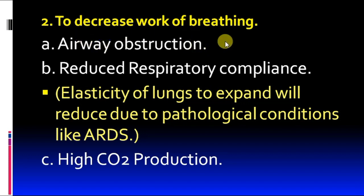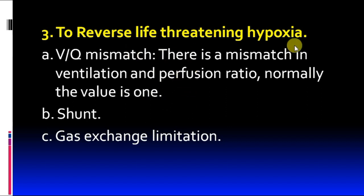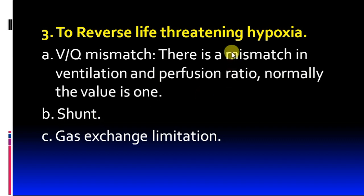Another indication is to reverse life-threatening hypoxia, indicated by ventilation-perfusion mismatch (normally a ratio of 1; any change leads to hypoxia), shunt (any abnormal connection in the respiratory tract causing inadequate oxygen supply), or gas exchange limitation due to lung pathology — all leading to hypoxia and warranting positive pressure ventilation.